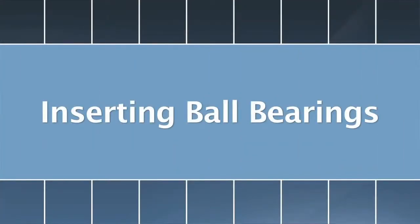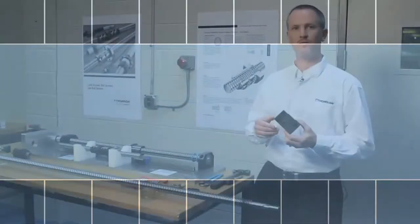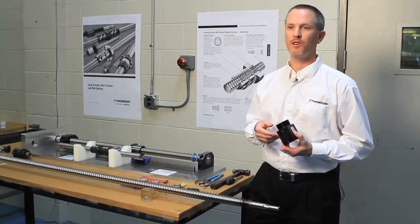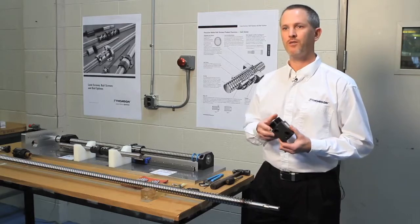It's not very uncommon that the ball bearings will fall out. One possible solution is to send it back to Thomson, and we can reload it here at the factory. Or you can do it in your facility on the screw itself.